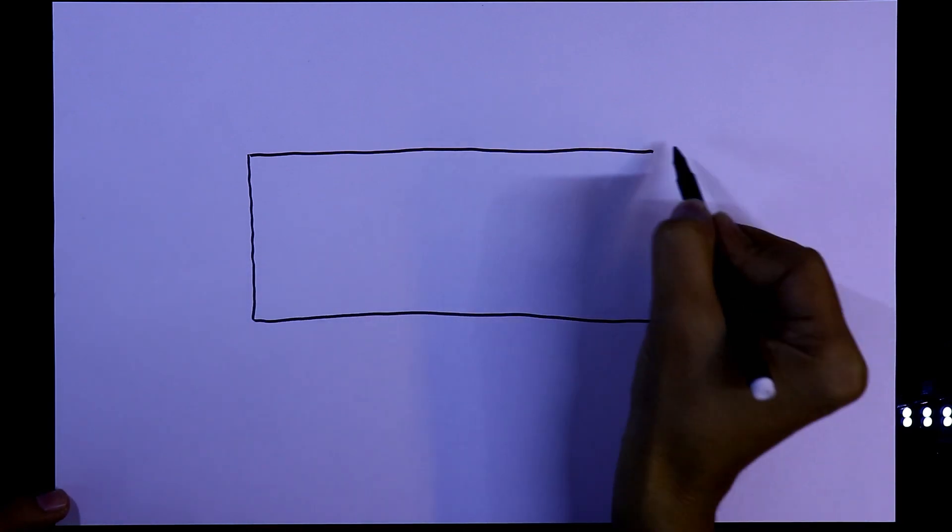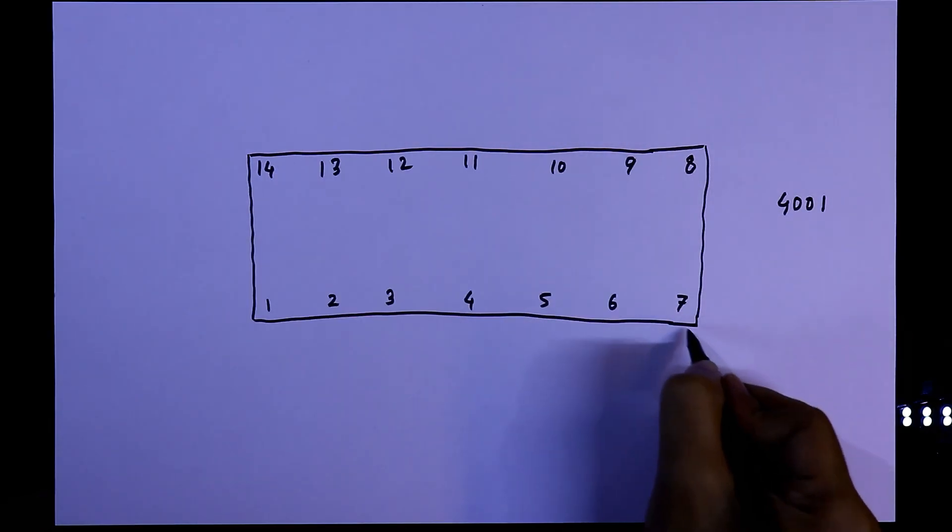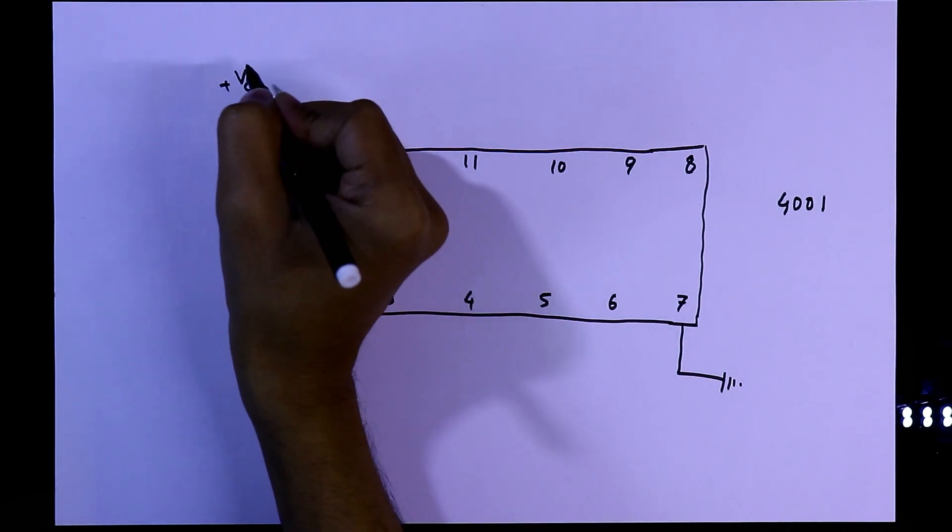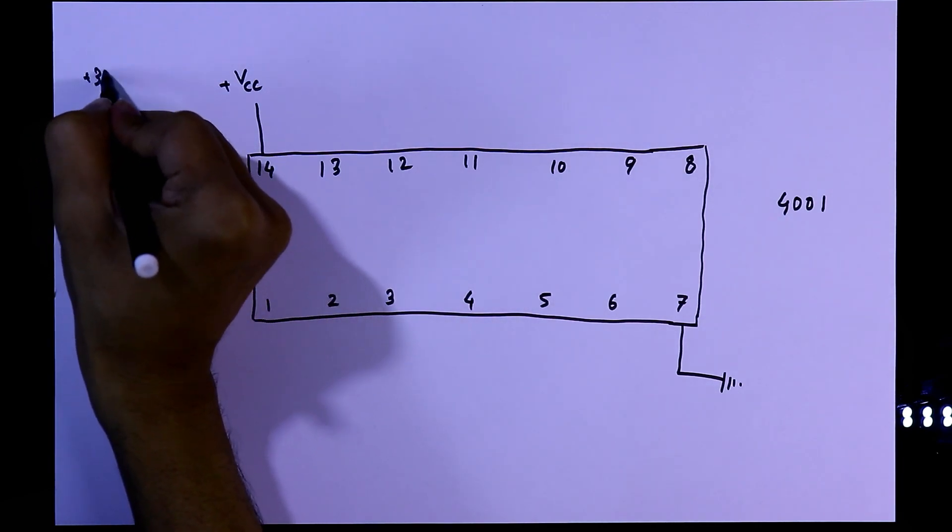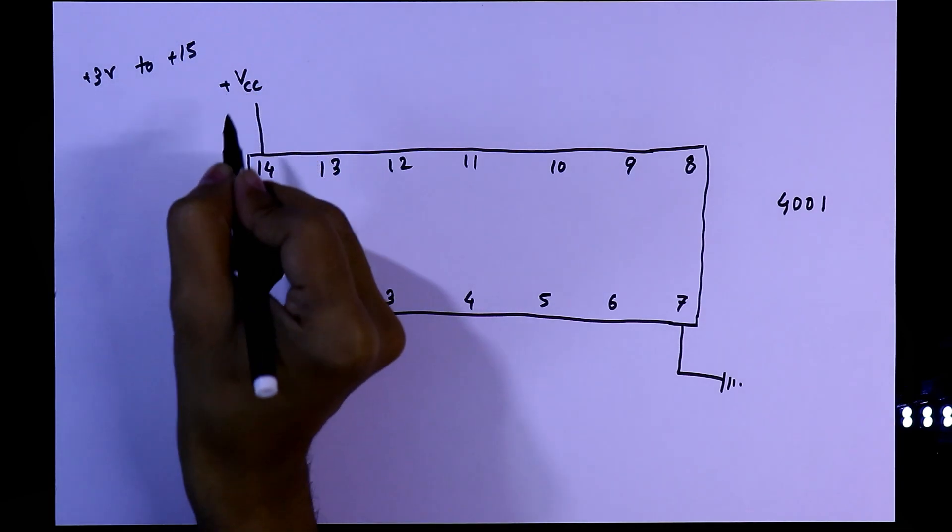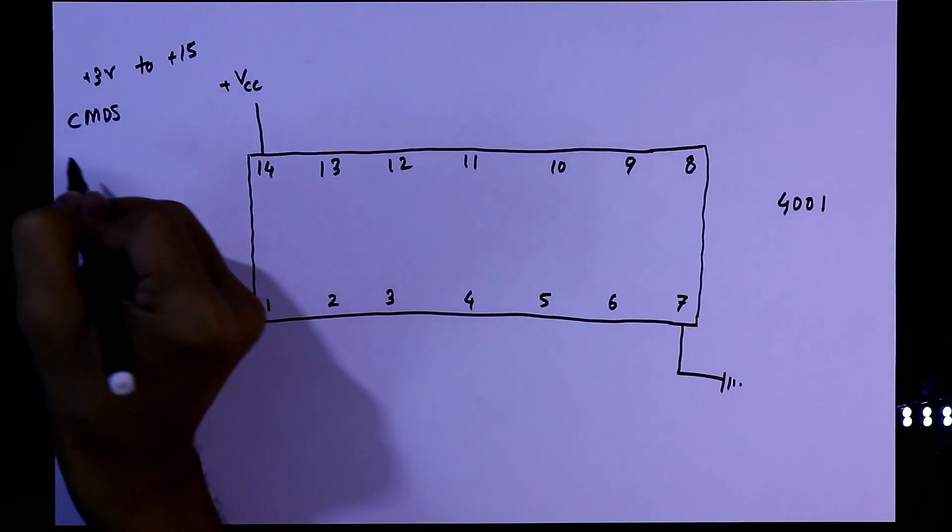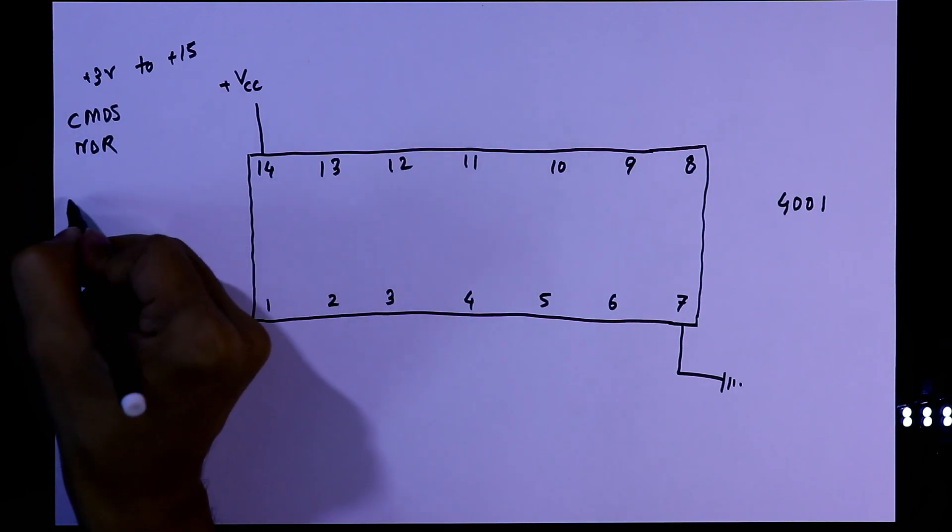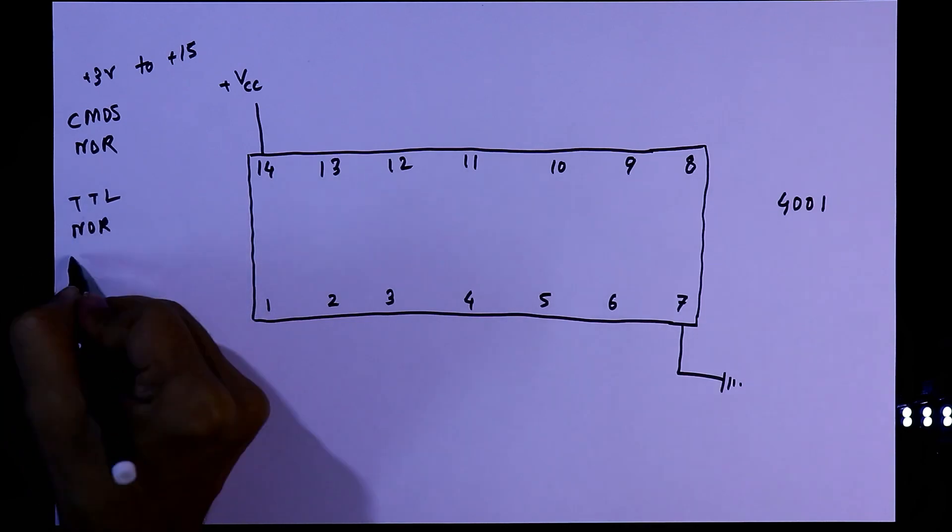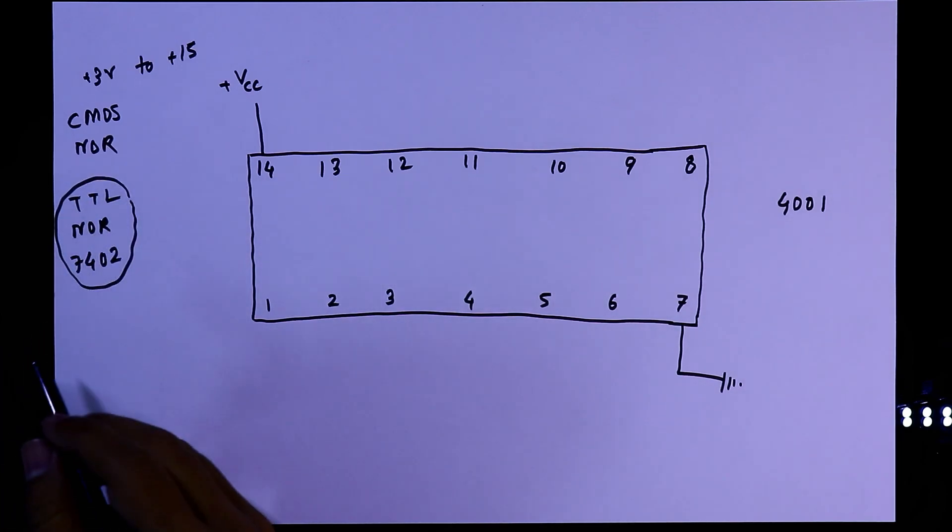This one is IC4001. It has 14 pins. Pin number 7 is ground pin and pin number 14 is plus VCC. You can connect plus 3V to plus 15V as a power supply. It is CMOS NOR gate, and I already explained the TTL NOR gate. The IC number is 7402. Link in the description below.